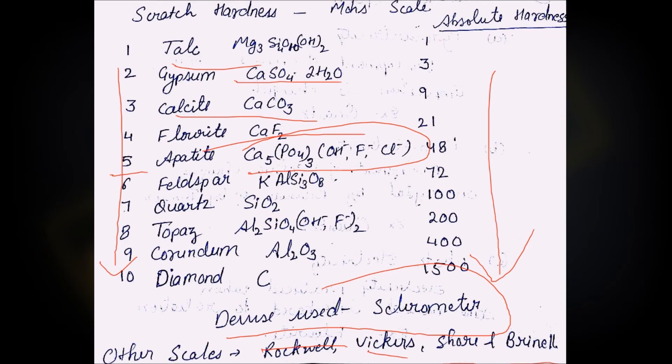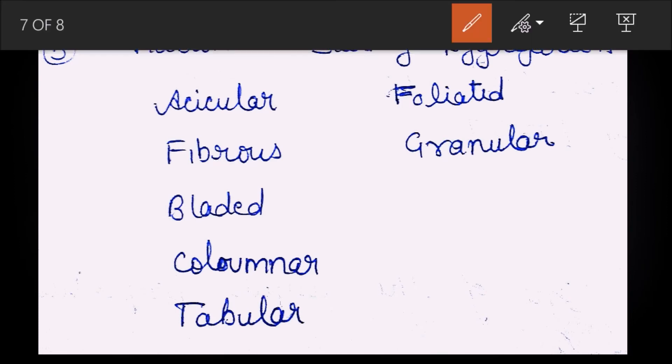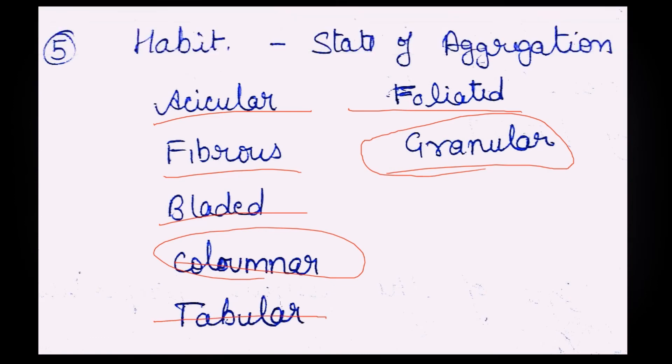Next is habit. Habit is the state of aggregation, meaning the shape in which the mineral is naturally found. Some are found in fibrous form, some in bladed form, some in columnar form, some are acicular or needle-shaped, some are foliated, some are granular like igneous granular rocks, and there are tabular forms and sheet-like structures. Habit means what is the habit of that mineral to stay in its natural form if undisturbed.